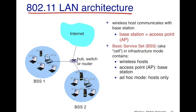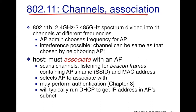The 802.11 architecture: first we have the wireless hosts, which are your typical smartphones or laptops which connect to the base station. The base station in a Wi-Fi network is the access point. What we have is a basic service set, or BSS, also known as the cell in infrastructure mode. It contains the wireless hosts — smartphones, laptops, any other device — which connects to your access point using Wi-Fi, and then the access point itself.